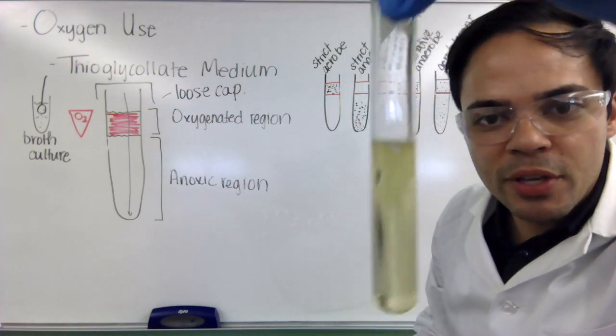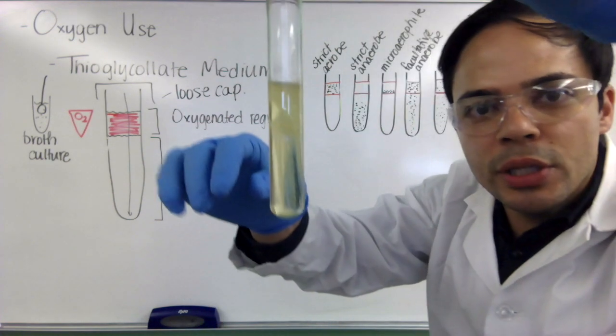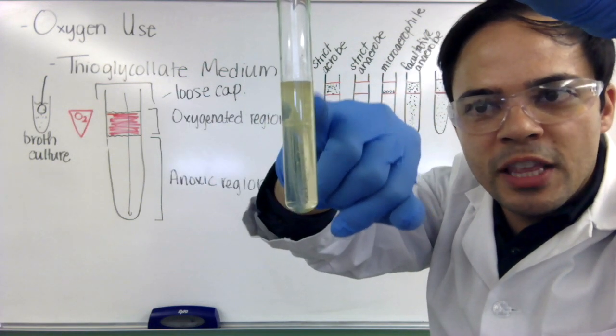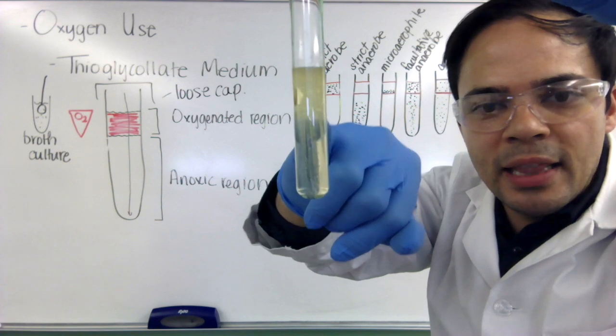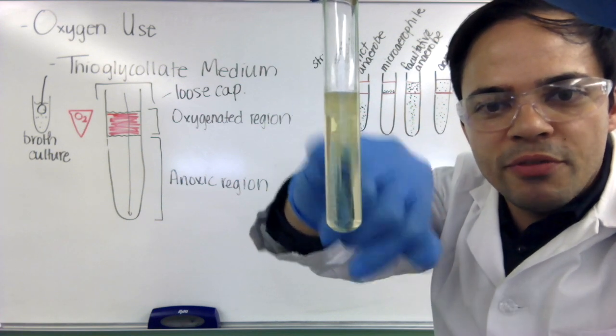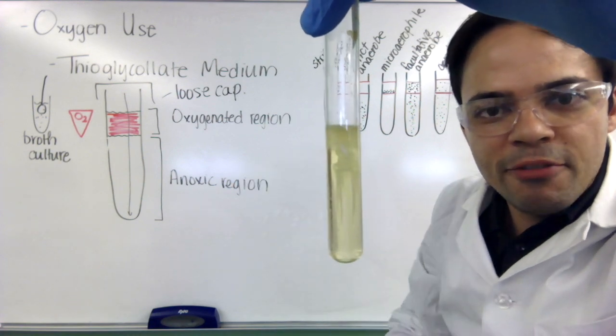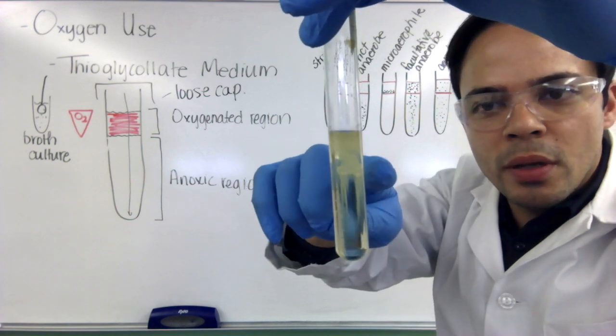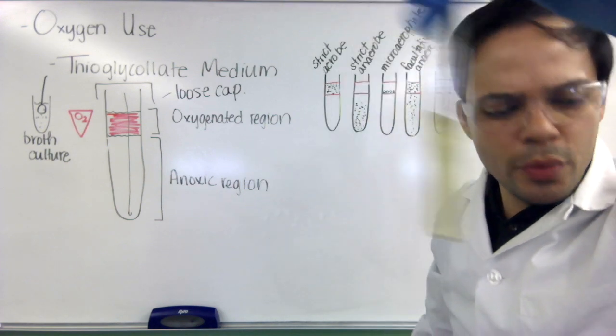And the next one we have here, you can actually see that on the top here in the oxygenated region, there's thick growth and then less growth at the bottom, but still growth. And it's actually in almost like a V-shaped pattern. So this I would say is a facultative anaerobe, grows really well with oxygen, but does not require oxygen to grow.